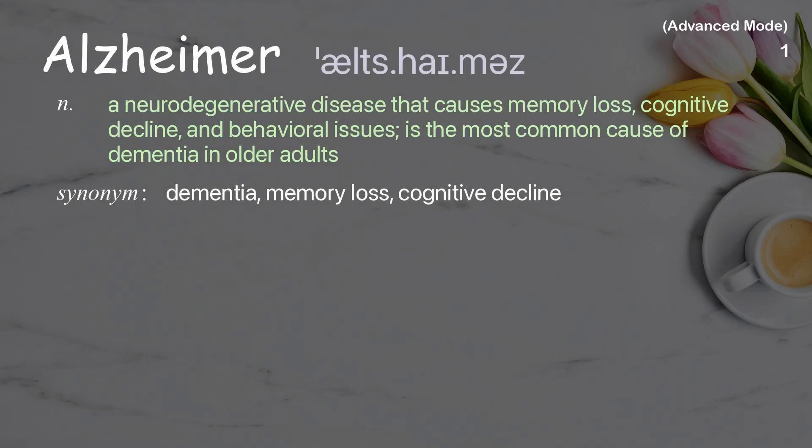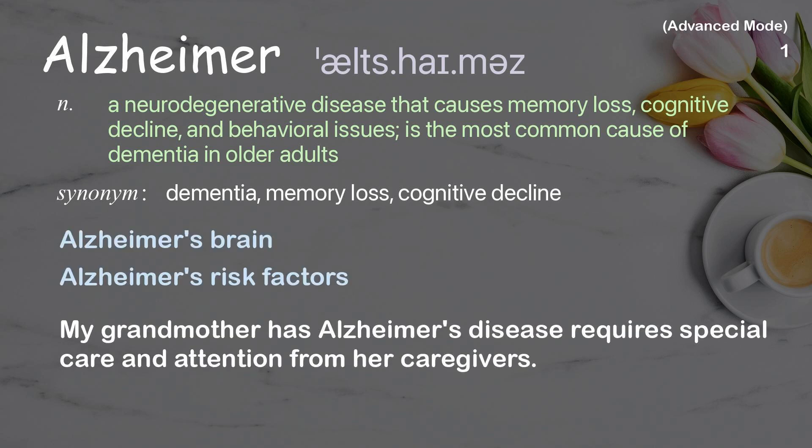Alzheimer: A neurodegenerative disease that causes memory loss, cognitive decline, and behavioral issues; it is the most common cause of dementia in older adults. Examples: Alzheimer's Brain, Alzheimer's Risk Factors. My grandmother has Alzheimer's disease, requires special care and attention from her caregivers.